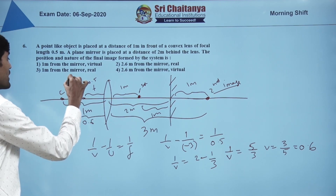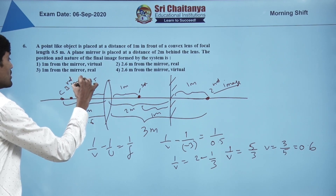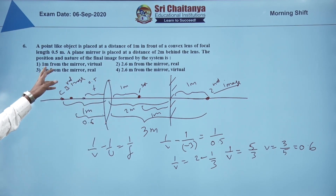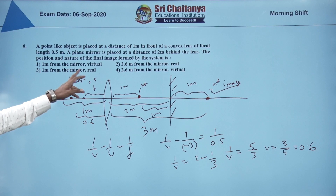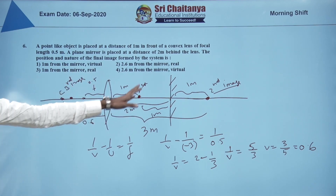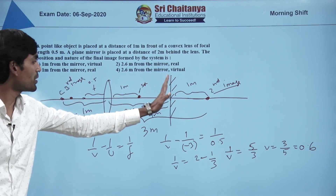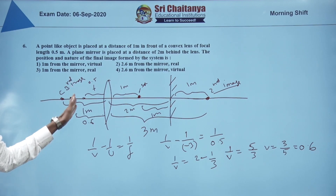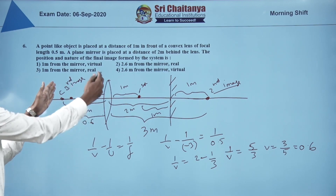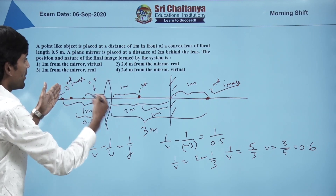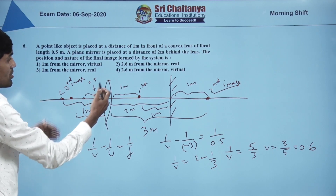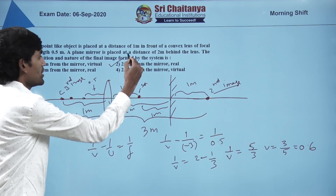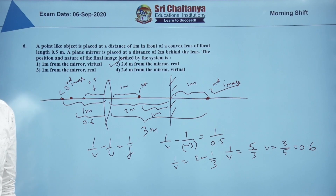The third and final image is at a distance of 0.6 m from the lens. Since distances are given from the mirror, it would be 2 + 0.6 = 2.6 meters from the mirror, and it forms a real image. The correct option is the second option: 2.6 meters from the mirror.